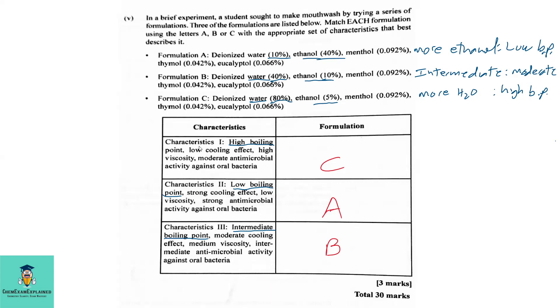So in looking at the characteristics, based on the information given, we could go with characteristics one would go best with formulation C with a higher boiling point and low cooling effect because the ethanol would have a lower percentage. For characteristics two, we say that would go with A because the boiling point is low in this case and a stronger cooling effect because it has a higher percentage of ethanol. And for characteristics three, we're going with B because it is now the intermediate boiling point where the water is not the lowest or not the highest. So we'll go with the intermediate to be B formulation.